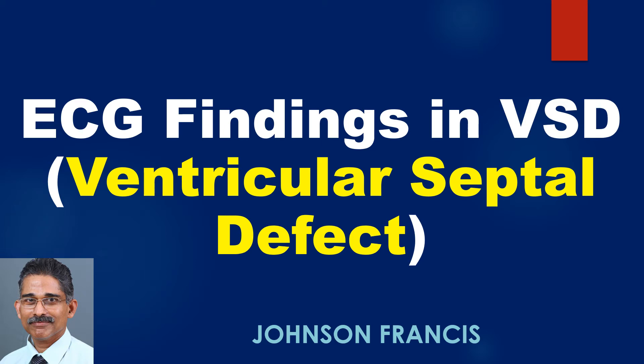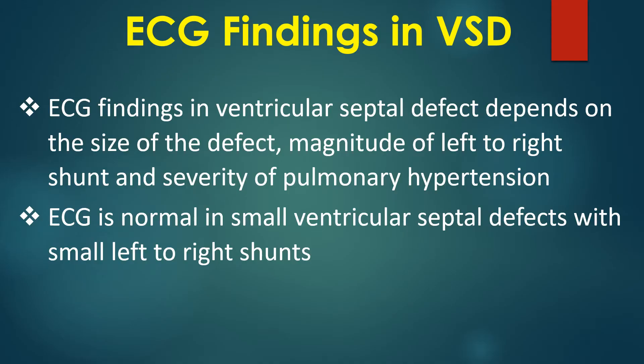ECG findings in ventricular septal defect depend on the size of the defect, magnitude of left to right shunt, and severity of pulmonary hypertension. ECG is normal in small ventricular septal defects with small left to right shunts.